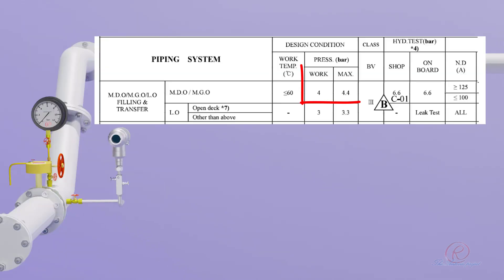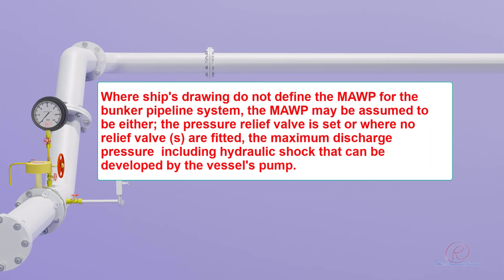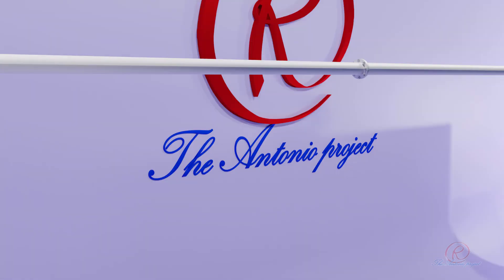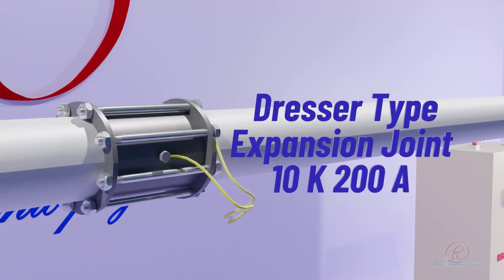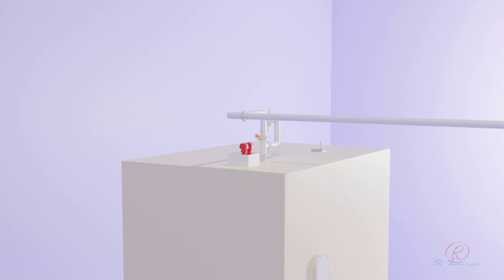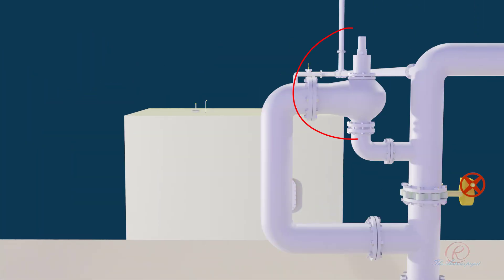Normally, the MAWP or Maximum Allowable Working Pressure is stated on the piping diagram. Where ship's drawings do not define the MAWP for the bunker pipeline system, the MAWP may be assumed to be either the pressure at which the relief valve is set, or where no relief valves are fitted, the maximum discharge pressure including hydraulic shock that can be developed by the vessel's pump. Safety valve setting pressure is 4.4 bar.